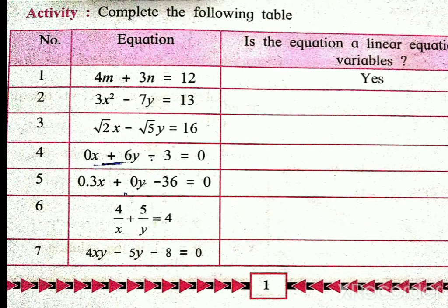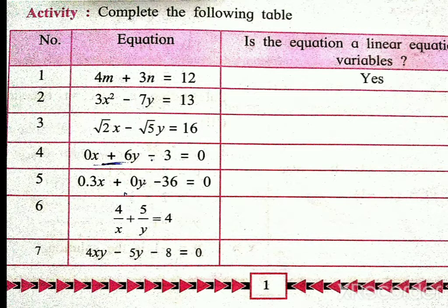Now see the activity: complete the following table. Students, here are given 3 columns — first column: number; second column: equation; and third column: is the equation a linear equation in two variables? You have to identify the given equations as linear equations in two variables or not.